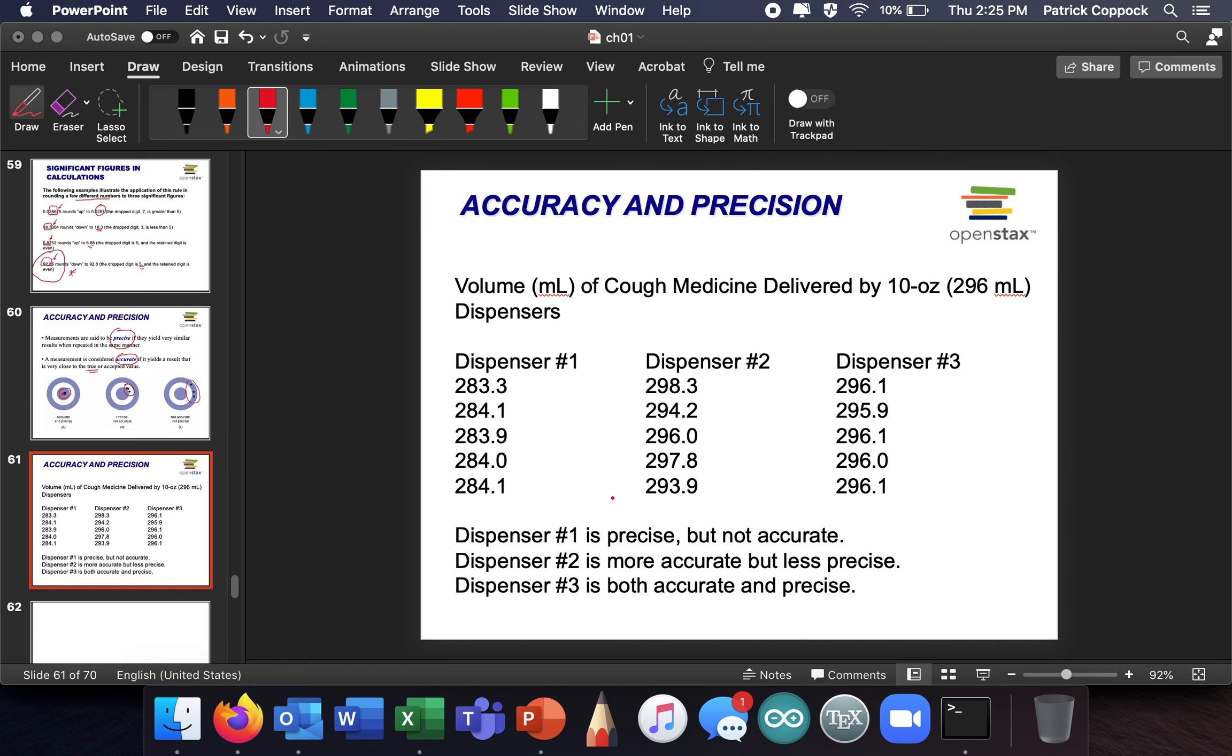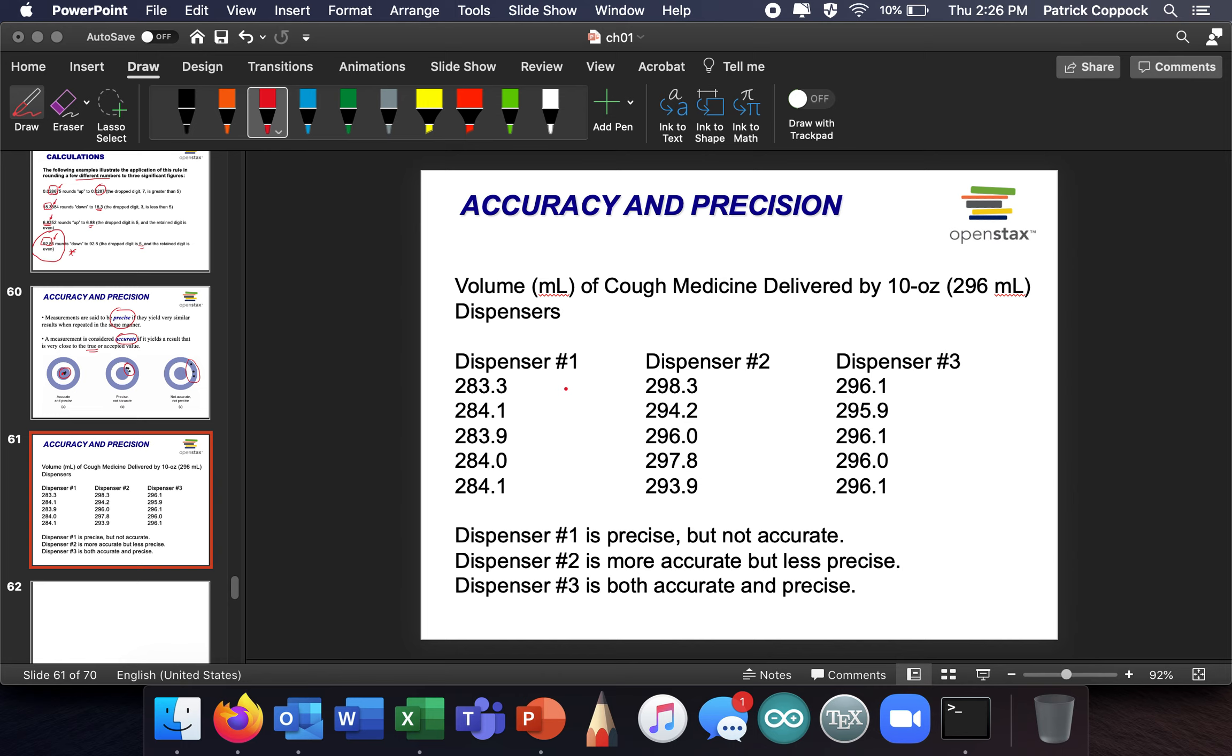So last, one last slide here, the volume of cough medicine delivered by a 10-ounce dispensers. Can you, I really should have deleted that before we looked at this. Look at this. Can you see these are all pretty close to, well, these are actually wandering out a good bit. Look at, if it's a 296 dispenser, 296 mil dispenser, then look at this. These are not 296. But they're all pretty close to each other. So yeah, I'd say this is precise, but not accurate, right? Because it's not 296. These are pretty close to 296. But they're not close to each other. So this is not precise, but it is accurate. And these, wow, look at these, are all right on top of 296 and very close to each other. So this is precise and accurate.